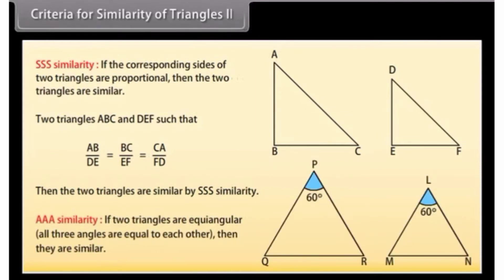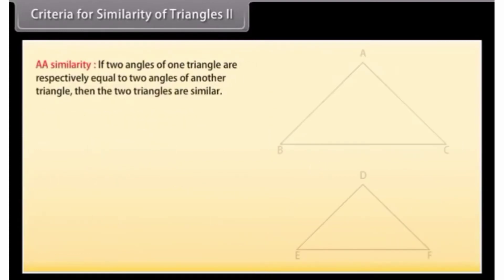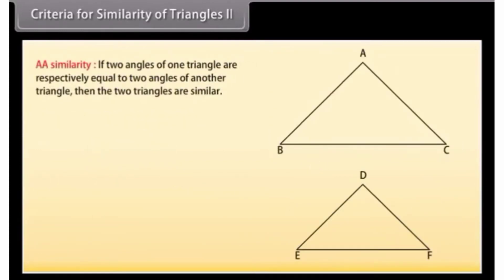AAA Similarity: If two triangles are equi-angular — all three angles equal — then they are similar. AA Similarity: If two angles of one triangle are respectively equal to two angles of another triangle, then the two triangles are similar.